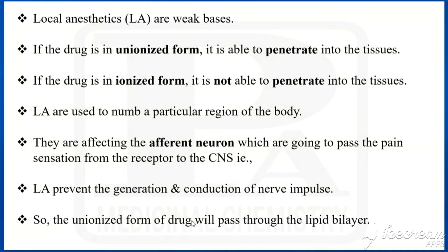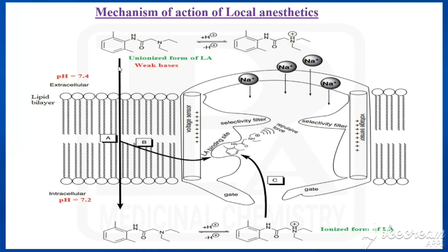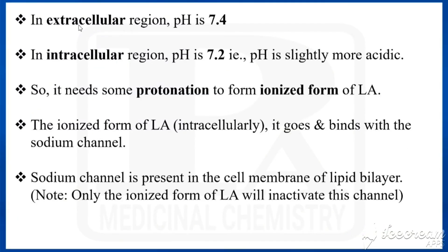The unionized form of the local anesthetic passes through the lipid bilayer. In the extracellular region, the pH is 7.4, whereas in the intracellular region, the pH is 7.2 — that is slightly more acidic — so the unionized form undergoes protonation to become the ionized form of the local anesthetic. This ionized form then goes and binds with the sodium channel present in the cell membrane. Importantly, only the ionized form of the local anesthetic will inactivate this channel.